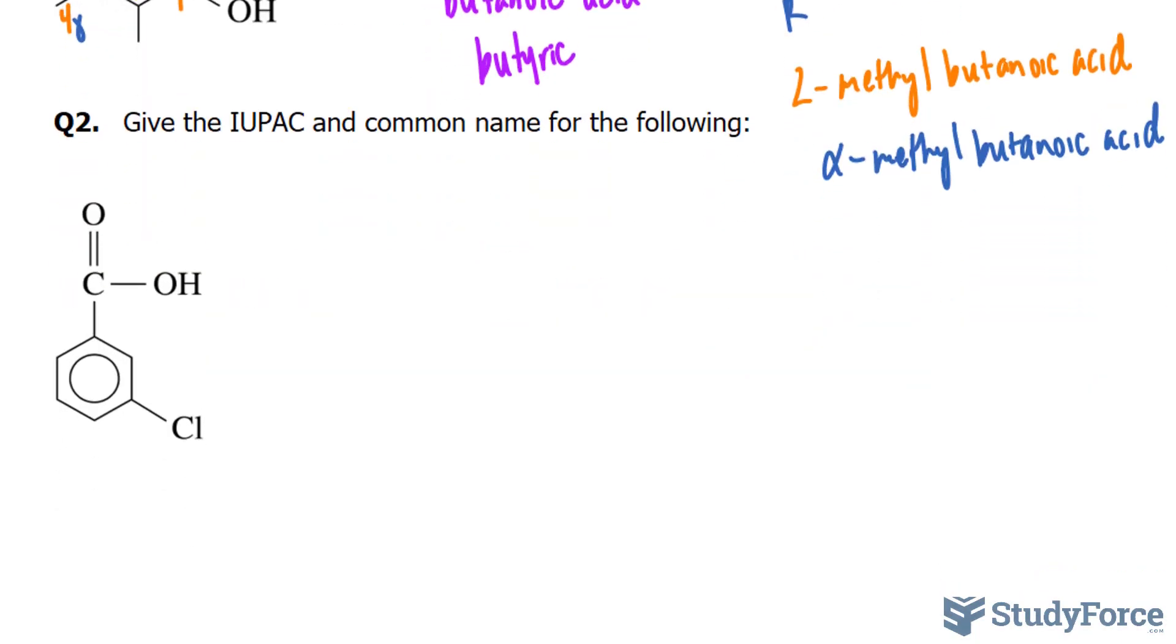That answers question one. In question two, give the IUPAC and common name for the following. As you can see, we have a benzene ring and we have two substituents: this carboxylic acid and this chlorine atom.